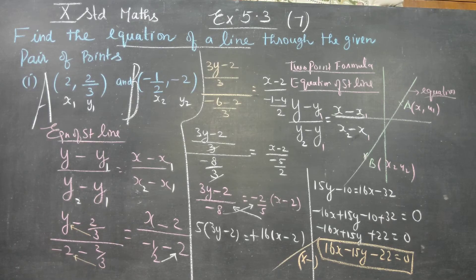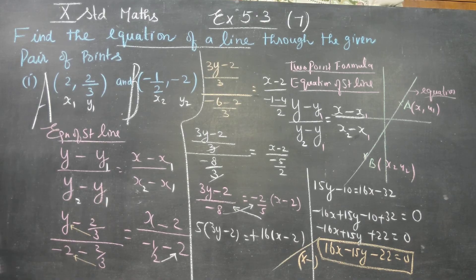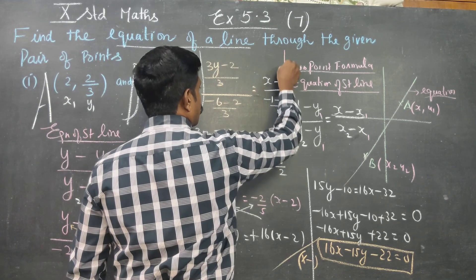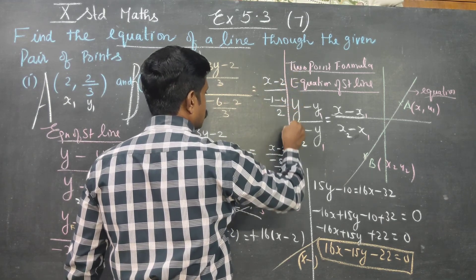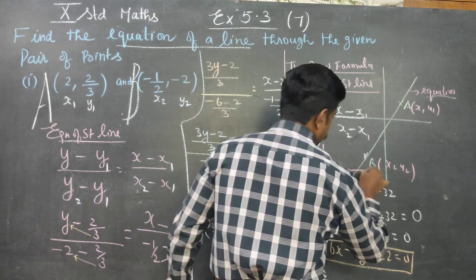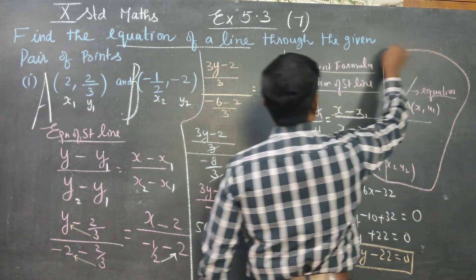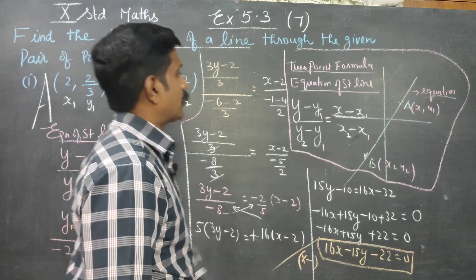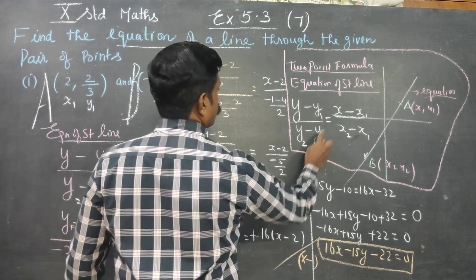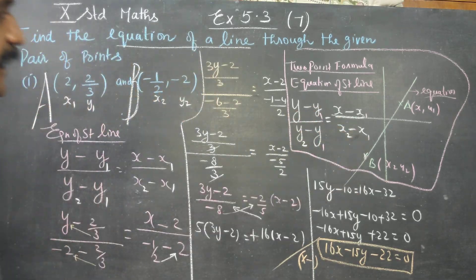This will be the equation of a line passing through two points using the two point formula. The two point formula is: y minus y1 by y2 minus y1 is equal to x minus x1 by x2 minus x1. This is called the two point formula. Thank you.